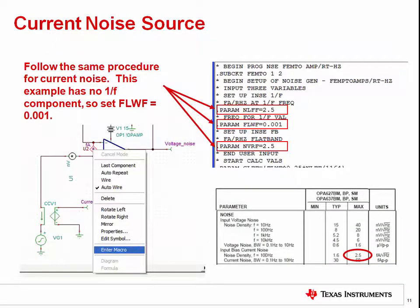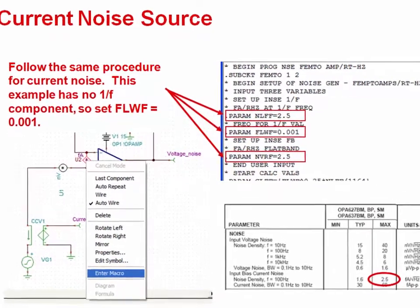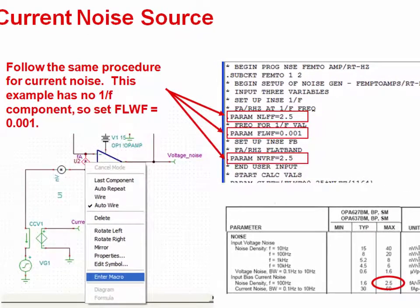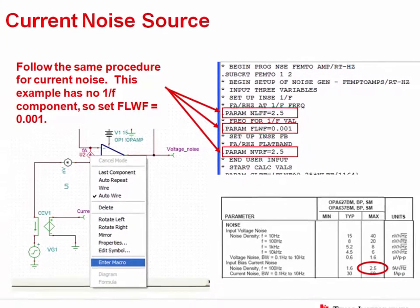The same procedure is done for the current noise source. In this example, the current noise source does not have a 1/f region, so set the 1/f noise the same as the broadband noise and enter the 1/f frequency at a very low frequency value, such as 0.001.